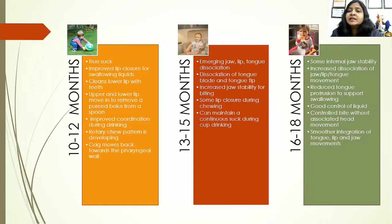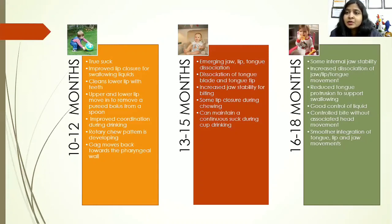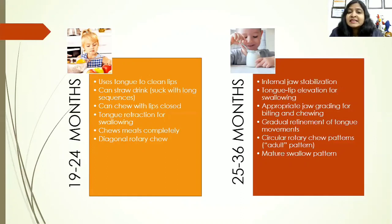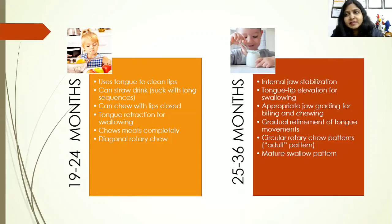At 13 to 15 months, we find emerging jaw, lip, and tongue dissociation — the jaw, tongue, and lips start working in a separate, dissociated manner, with some lip closure during chewing. Around 15 to 16 months, children start closing the mouth during chewing. At 16 to 18 months, there will be internal jaw stability, increased dissociation, reduced tongue protrusion, and the mature swallow pattern starts setting in. At 19 to 24 months, children can use their tongues in all ways — elevated, lateral, depressed — and tongue movements are enhanced. By three years, internal jaw stabilization occurs, tongue tip elevation for swallowing, and all mature patterns are set in.